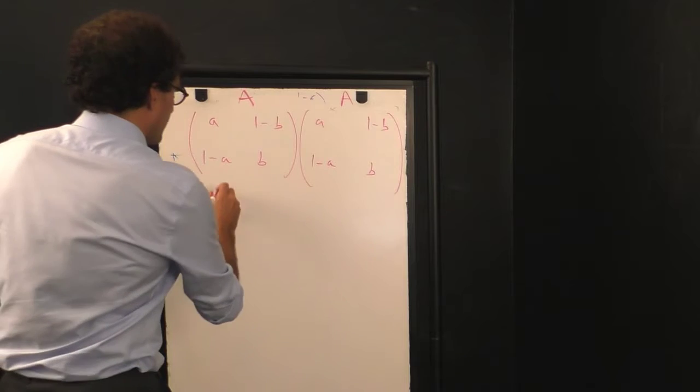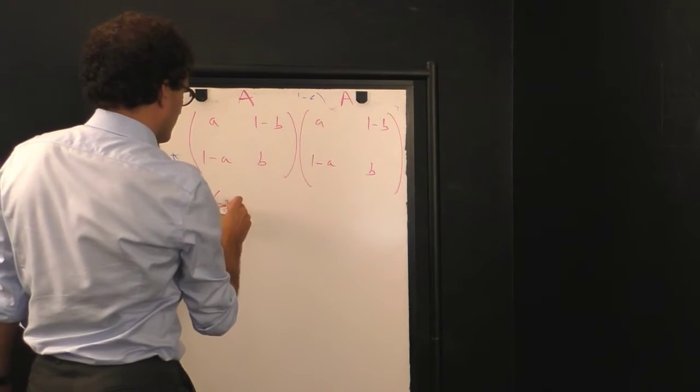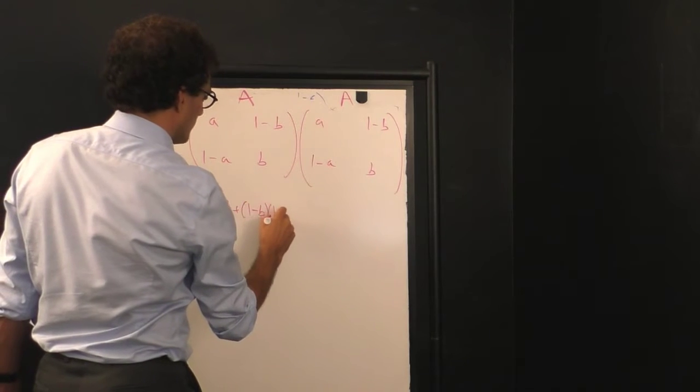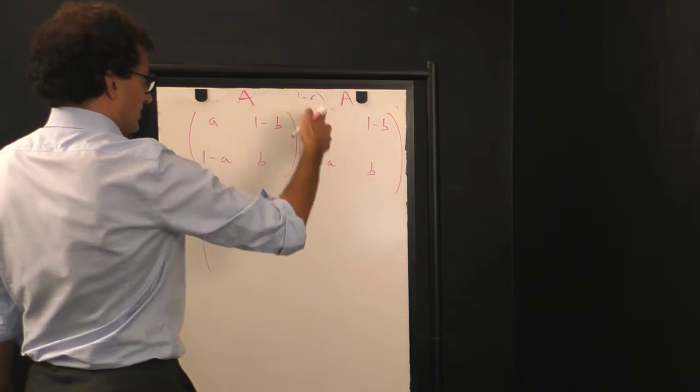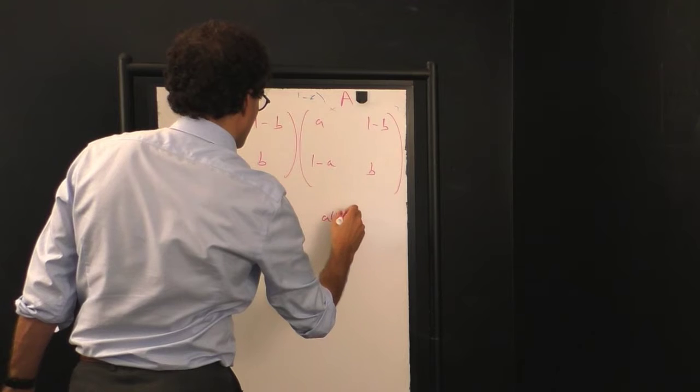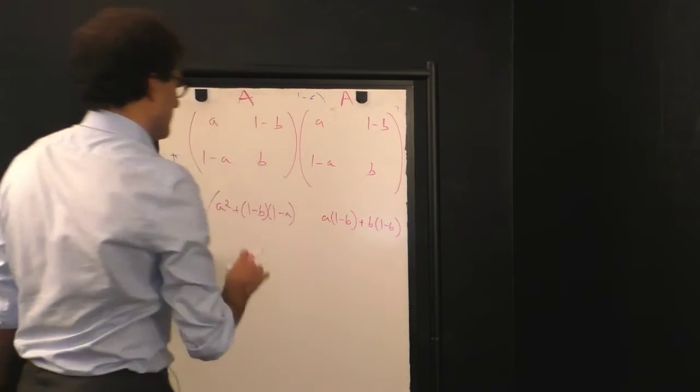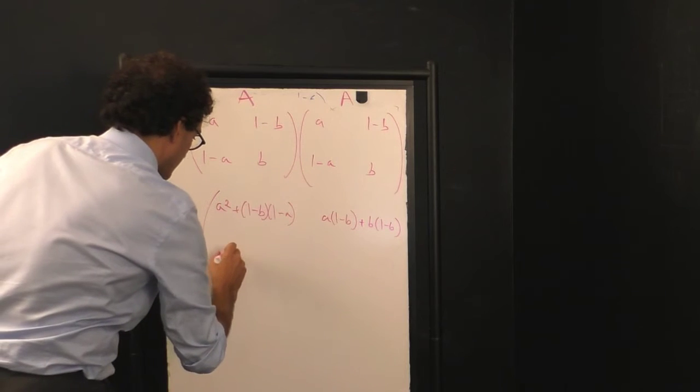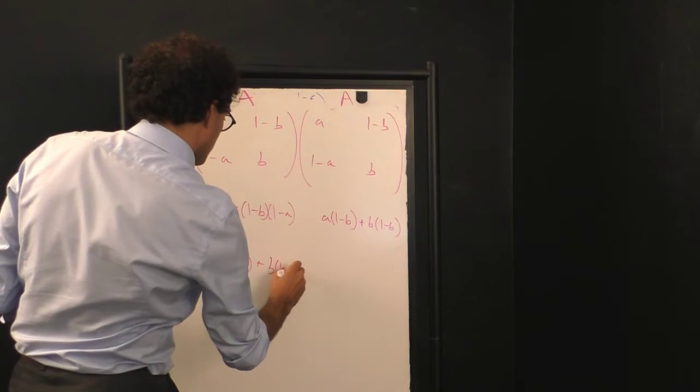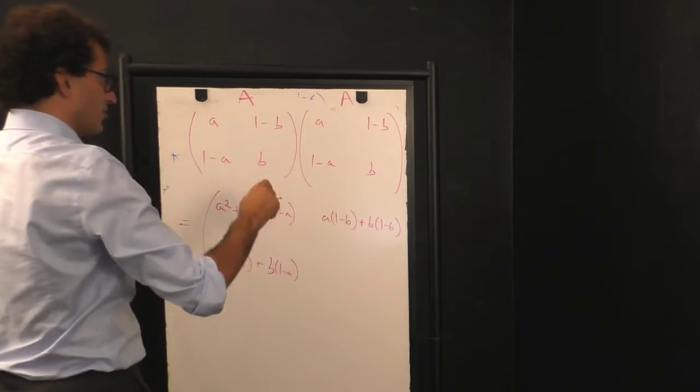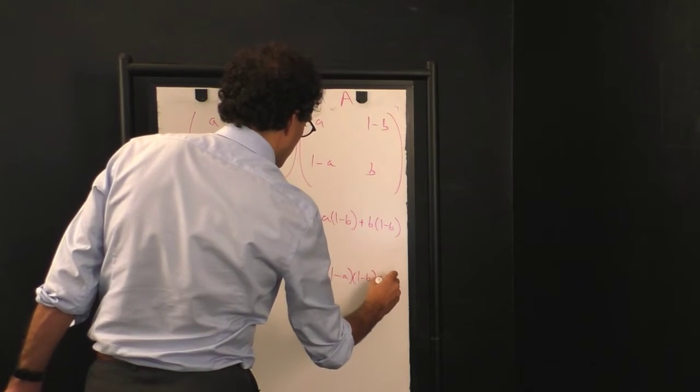we find in the top corner here, we have A squared plus 1 minus B times 1 minus A. And let's say down to the right we have A times 1 minus B plus B times 1 minus B. Down here we have A times 1 minus A plus B times 1 minus A. And in the far lower right-hand corner we have 1 minus A times 1 minus B plus B squared.